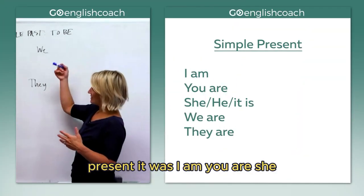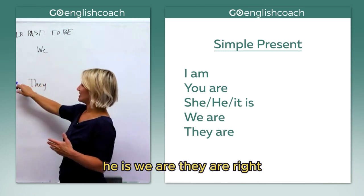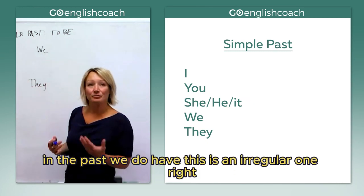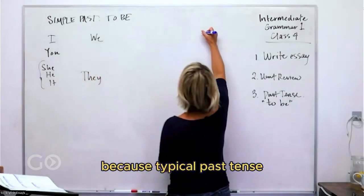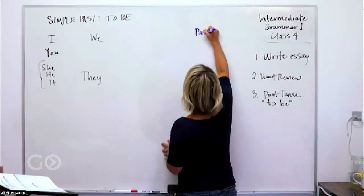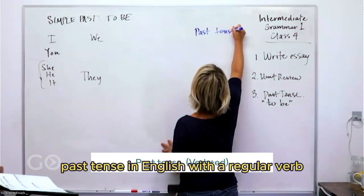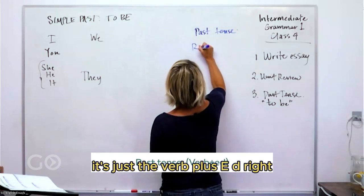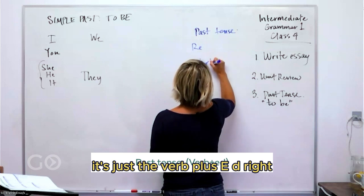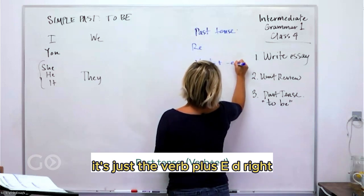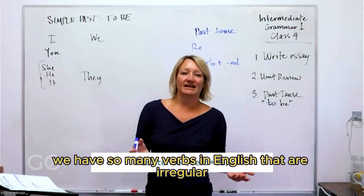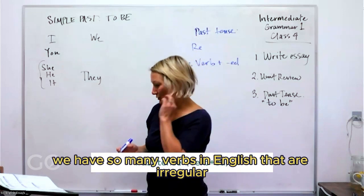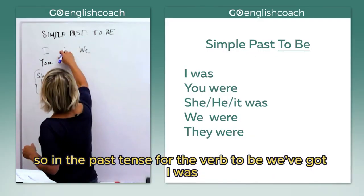Remember in the present it was: I am, you are, she/he is, we are, they are, right? In the past, this is an irregular one, because typical past tense, what do we do for past tense in English with a regular verb? It's just the verb plus -ed, right? That's the general rule. But of course we have so many verbs in English that are irregular.